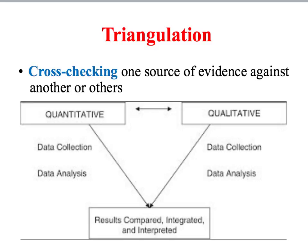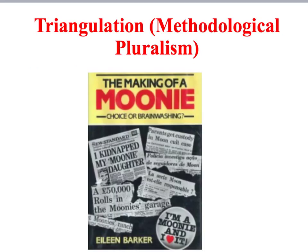The idea of triangulation is that you are cross-checking one source of evidence against another. If you have corroborating evidence from more than one type of research method, you can be more confident about your findings. Triangulation helps the sociologist overcome or compensate for the limitations of one research method by using the advantages of others, and in doing so allows the sociologist to build up a fuller picture of the population, group, or social institution being studied. Eileen Barker's study of the religious cult of the Moonies is a good example, as she investigated the group using observations, questionnaires, and interviews.